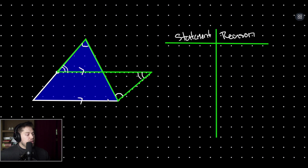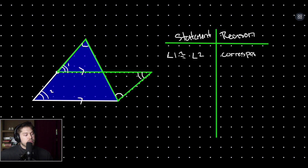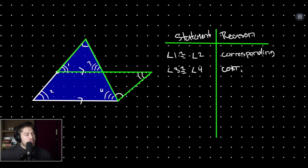Since these lines are parallel, angle 1 and angle 2 are corresponding angles, so angle 1 is congruent to angle 2 via the corresponding angles theorem. Likewise, angle 3 is corresponding to angle 4, so they are also congruent by corresponding angles.